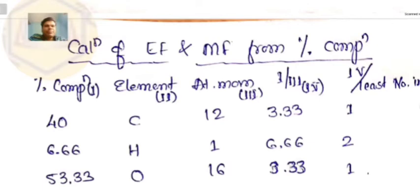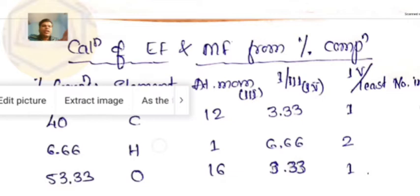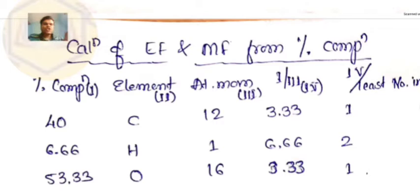Now let's look at calculating empirical formula and molecular formula from percentage composition — a very important type of problem. Suppose a compound contains: carbon 40%, hydrogen 6.66%, and oxygen 53.33% (which you can get as 100 minus the sum of the others). This information will be given to us.